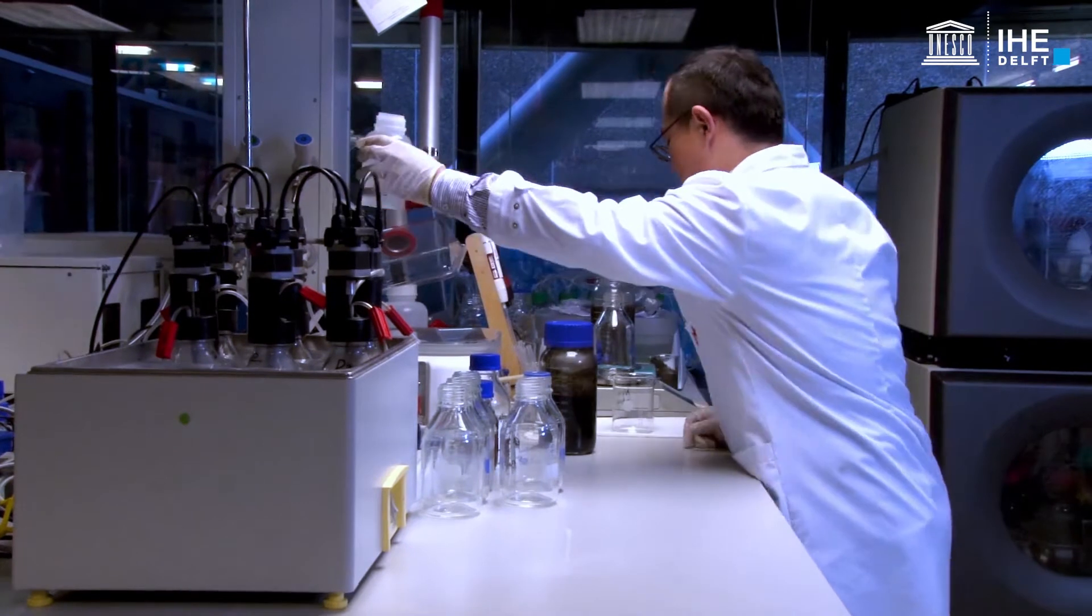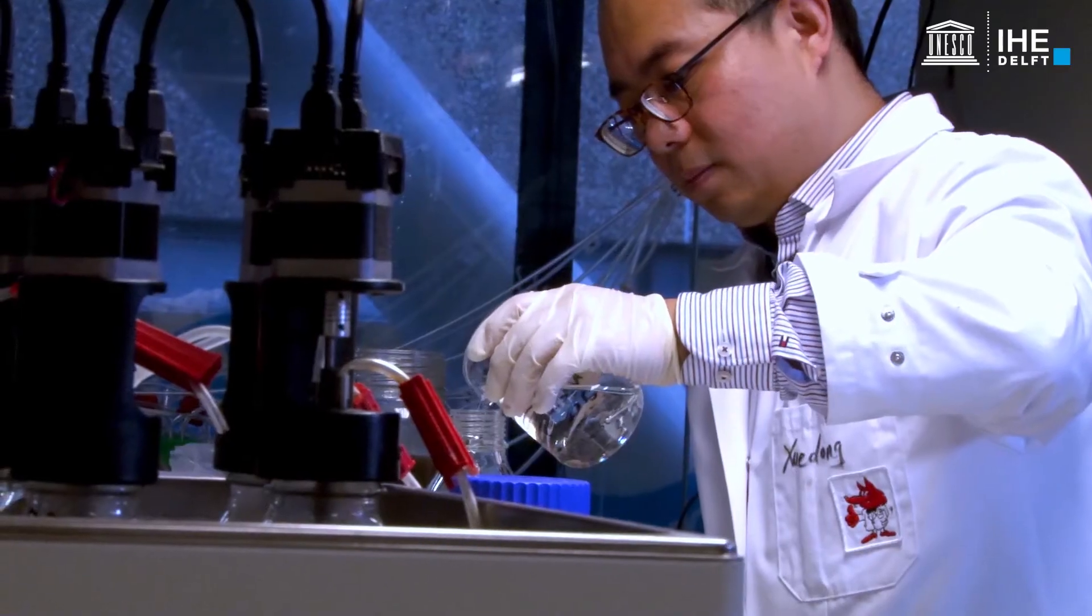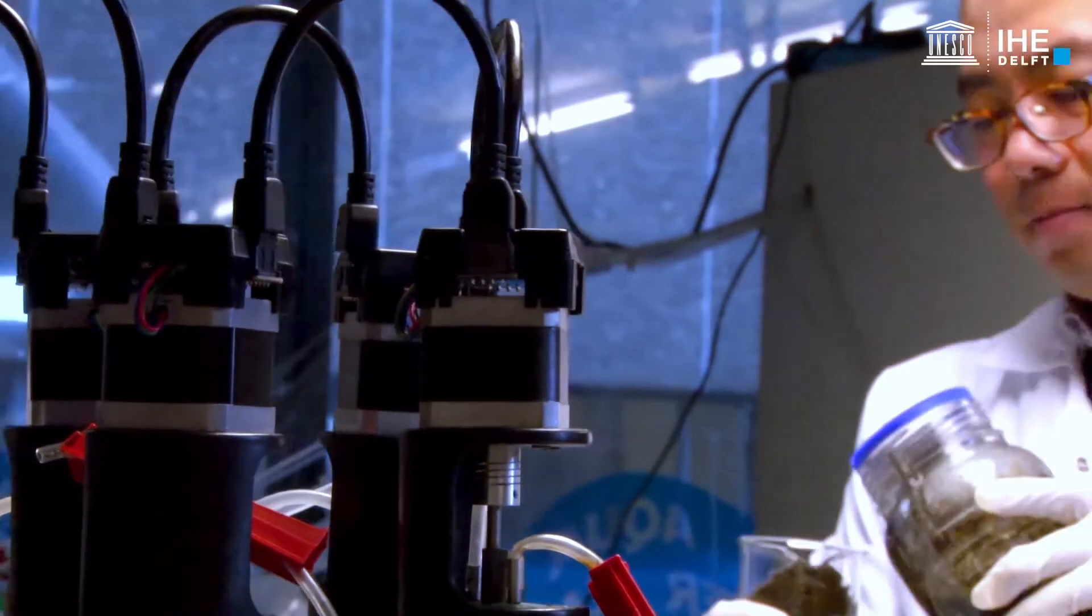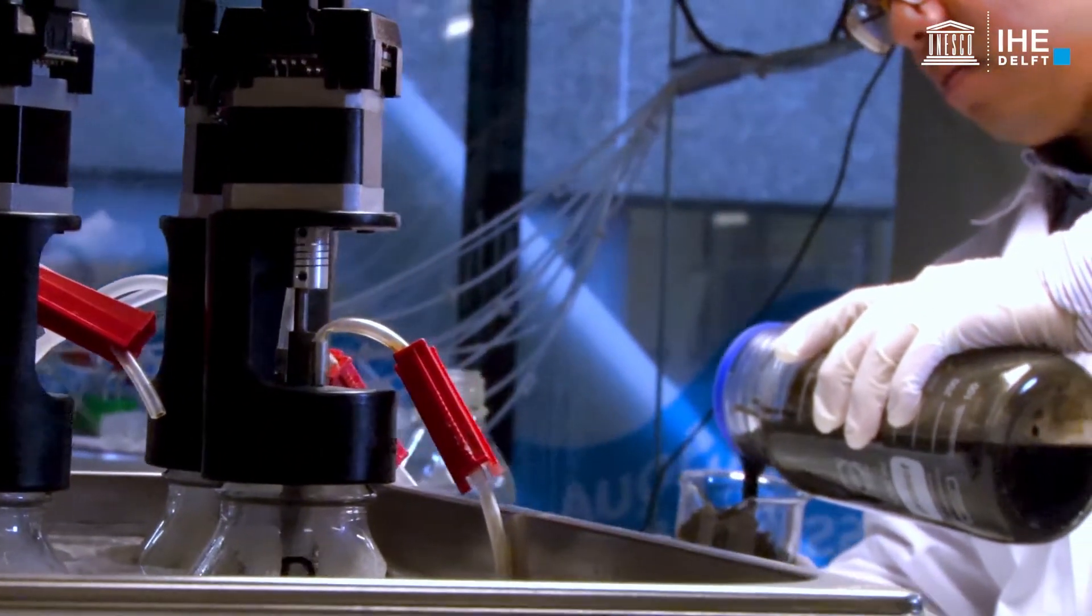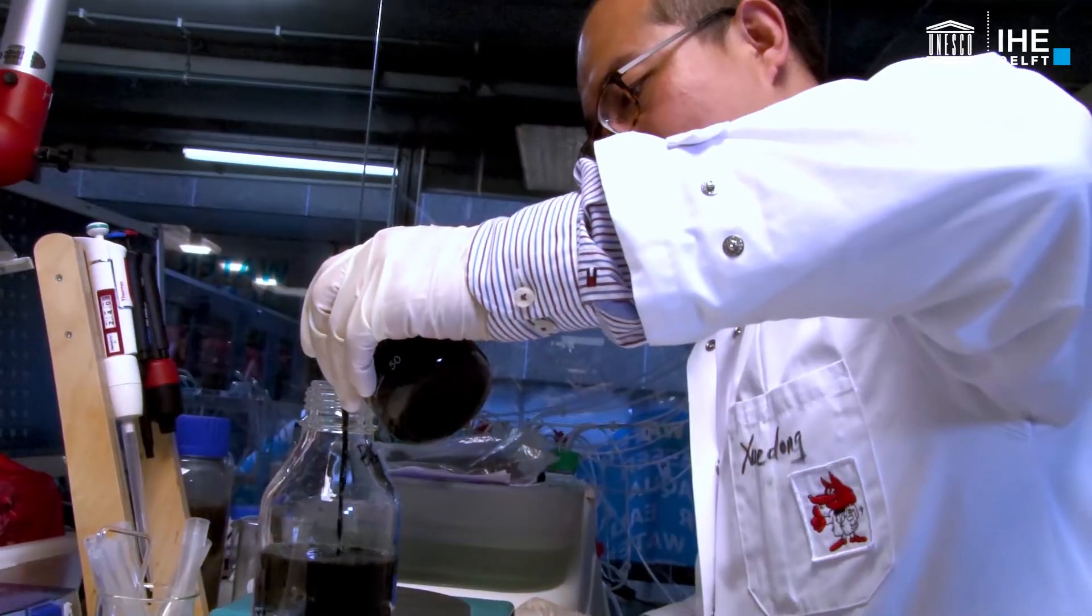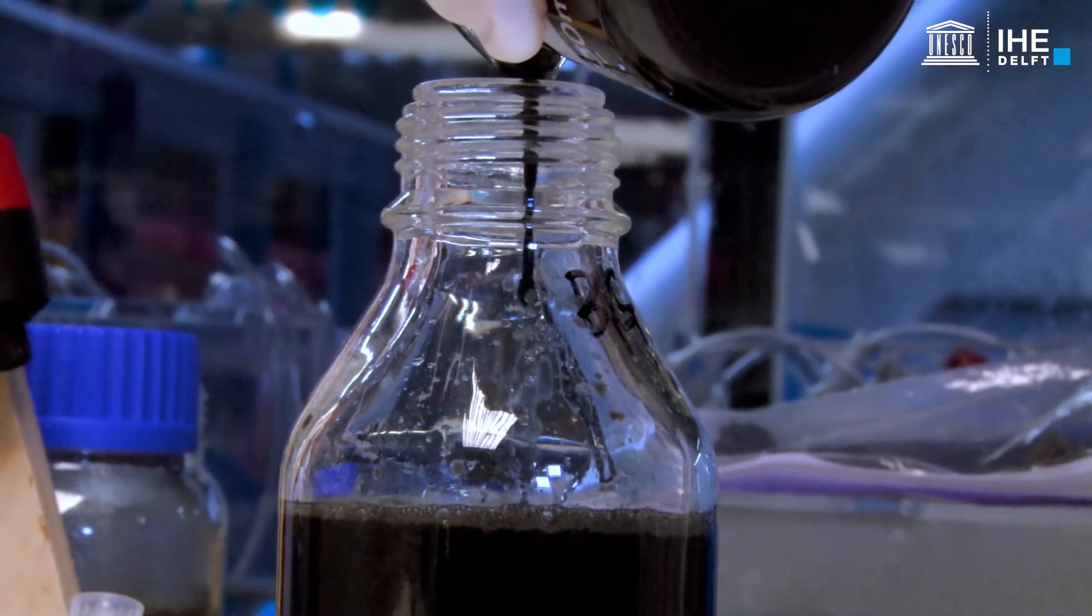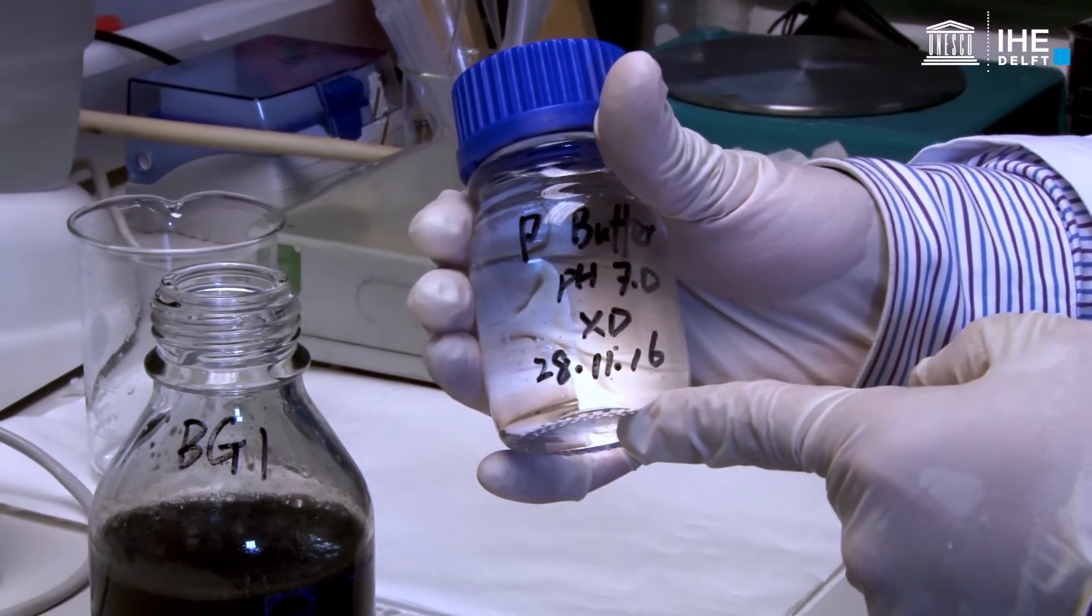For the blanks, using a balance, first weigh and fill up the bottle with the volume of inoculum estimated. Use a pipette to add the phosphorus buffer solution.